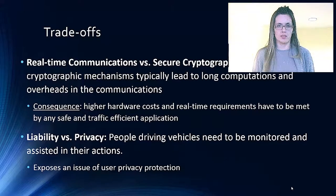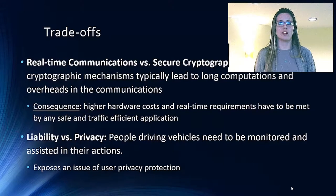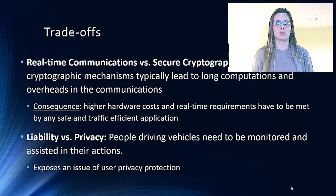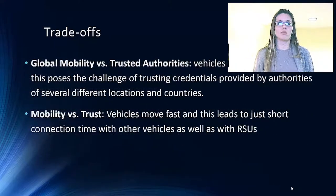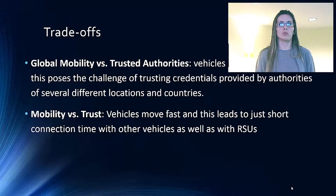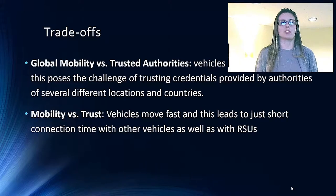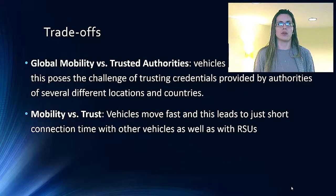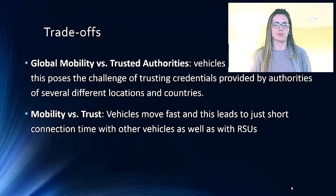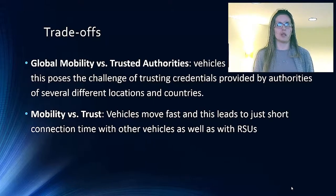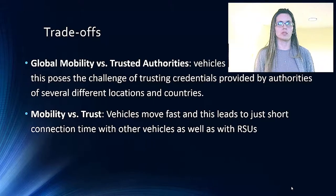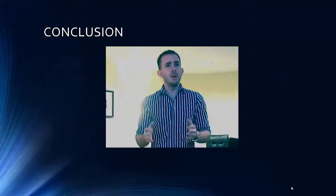Liability versus Privacy: people driving vehicles need to be monitored and assisted, which naturally exposes an issue of user privacy protection. Global Mobility versus Trusted Authorities: in some scenarios vehicles move worldwide, posing the challenge of trusting credentials provided by authorities of several different locations and countries. Mobility versus Trust: vehicles move fast, leading to short connection times with other vehicles as well as with roadside units, making long-term trust relationships difficult to maintain.